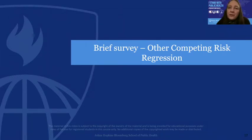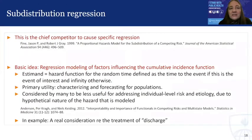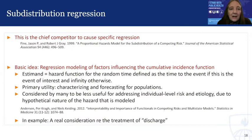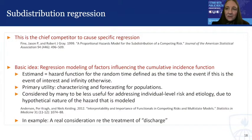Let's close out with a very brief survey of other approaches one might take to study competing risks. The first is what's called sub-distribution regression, and in fact this is the chief competitor to cause-specific regression. The basic idea of this technique is literally regression modeling for the cumulative incidence function, and so you can see why one very convenient way to estimate the cumulative incidence function is just to use this regression technique.